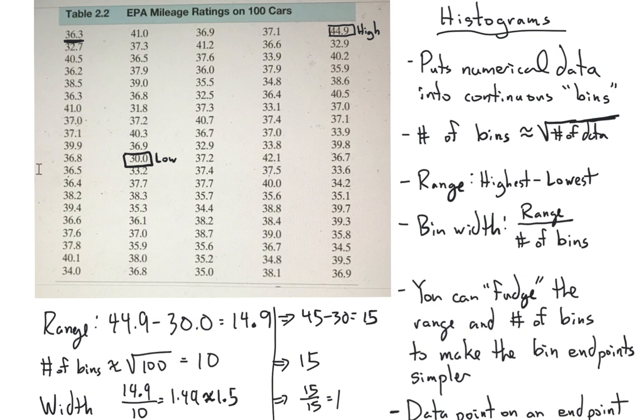Before I do that, I want to talk about what happens if we have a data point right on an endpoint. For example, 37 is right on a border between 36 and 37 and 37 and 38. When we have a data point right on the border, we include it in the bin to the right, the larger bin, the bin with the larger numbers. So let's go ahead and make a little frequency table with this data.